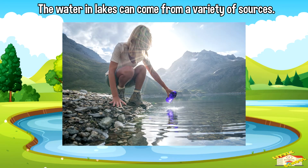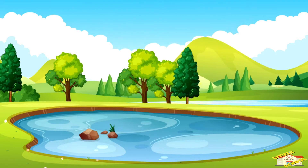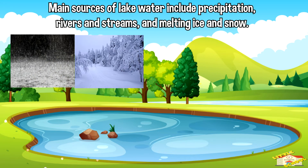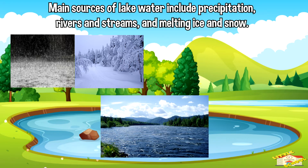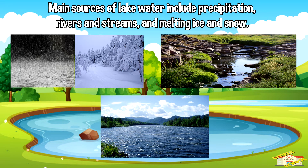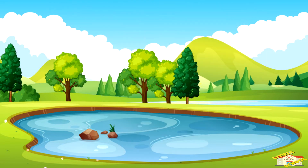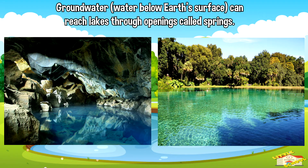The water in lakes can come from a variety of sources. The main sources of lake water include precipitation, which is rain or snow, rivers and streams, and melting ice and snow. Groundwater, which is water below Earth's surface, can reach lakes through openings called springs.